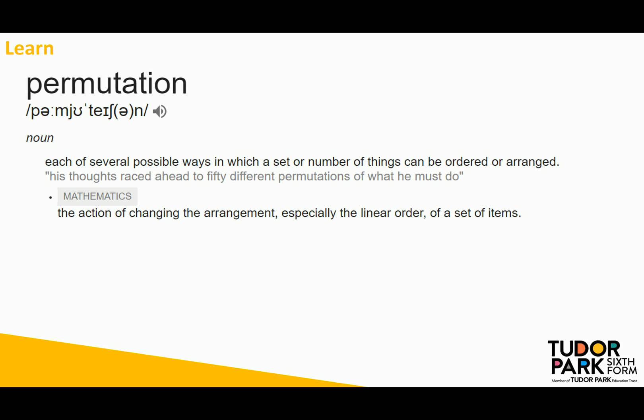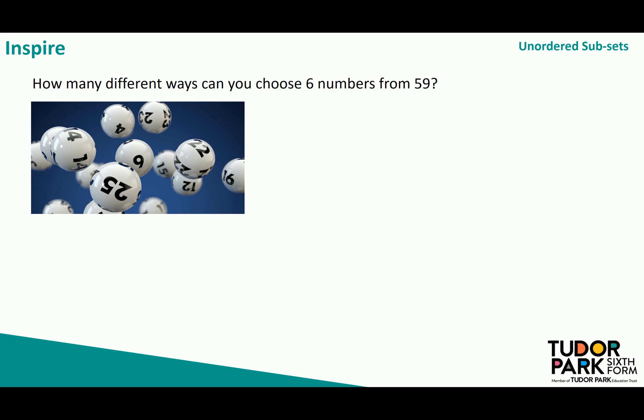But what if order doesn't matter? Let's think about the lottery and definitely not playing the lottery. How many different ways can you choose six numbers from 59? Well we've just seen the permutations of this are going to be 59 factorial over 59 minus six factorial.